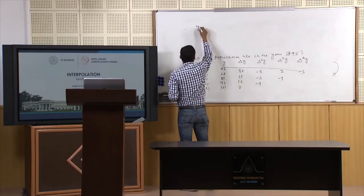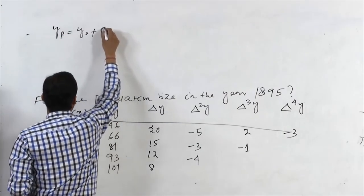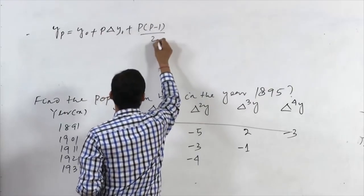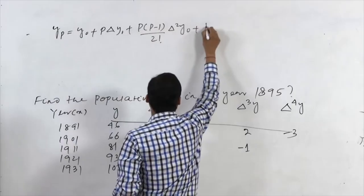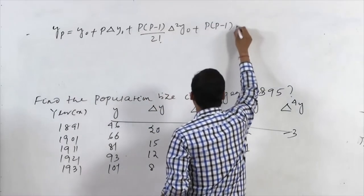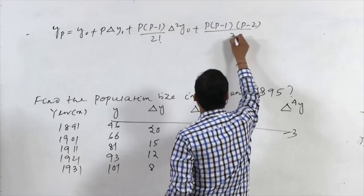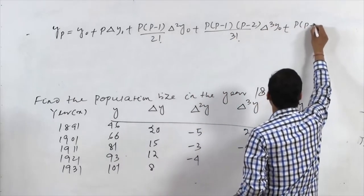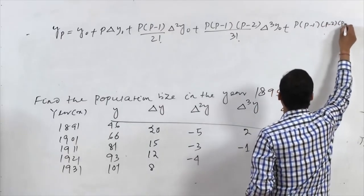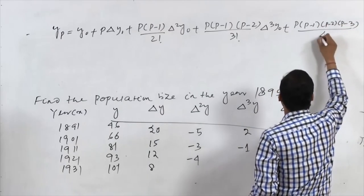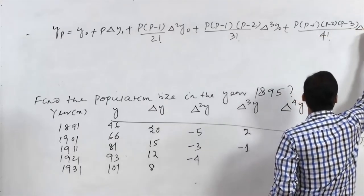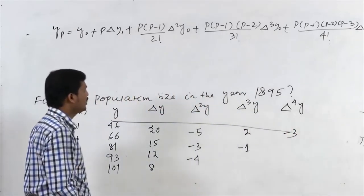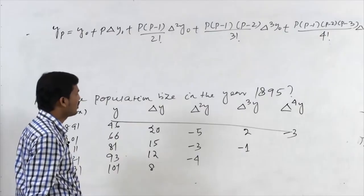The Newton's forward difference formula is: Y(p) = Y₀ + p·ΔY₀ + p(p−1)/2! · Δ²Y₀ + p(p−1)(p−2)/3! · Δ³Y₀ + p(p−1)(p−2)(p−3)/4! · Δ⁴Y₀. Since the tabular values extend up to the fourth-order difference, we consider the expansion up to the fourth-order term.